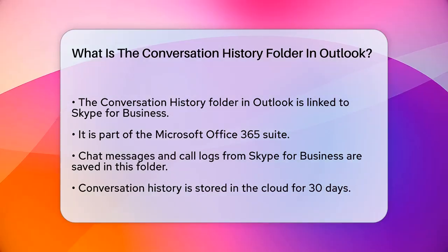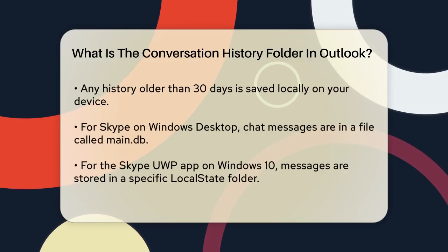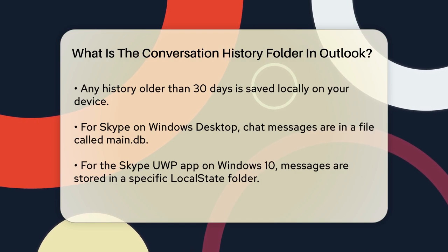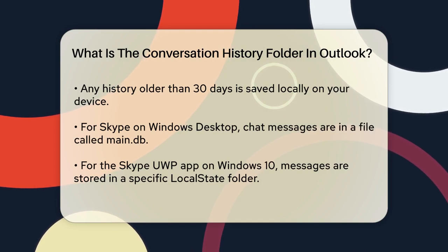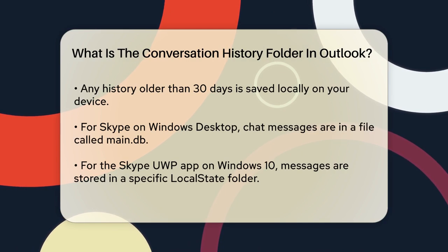Here's how it works. The Conversation History is stored on the cloud for the last 30 days. Any history older than 30 days is saved locally on your device in a specific Skype folder.